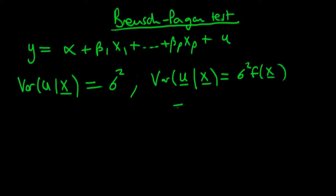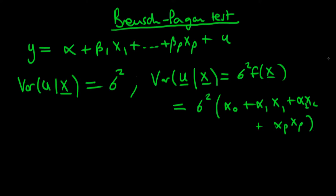We might think that one particular function of the independent variables might be α₀ + α₁x₁ + α₂x₂ + ... + αₚxₚ. This is very general — any of these alphas might be equal to zero. But if any of these alphas are different from zero other than α₀, that is a sign of heteroskedasticity and our OLS estimators are no longer BLUE — in particular they're no longer best, as there are other linear unbiased estimators which are more efficient.